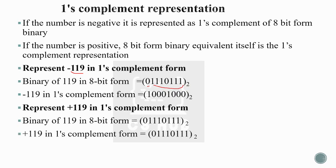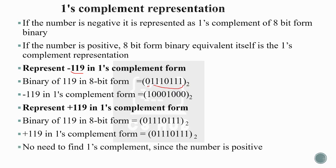For plus 119 in one's complement form, the representation is the same as the 8-bit binary equivalent — 01110111. No need to find the one's complement since the number is positive. A positive number's one's complement representation is just its 8-bit binary form; no inversion is needed.